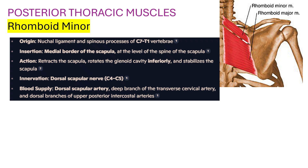Innervation: dorsal scapular nerve, C4–C5. Blood supply: dorsal scapular artery, deep branch of the transverse cervical artery, and dorsal branches of the upper posterior intercostal arteries.